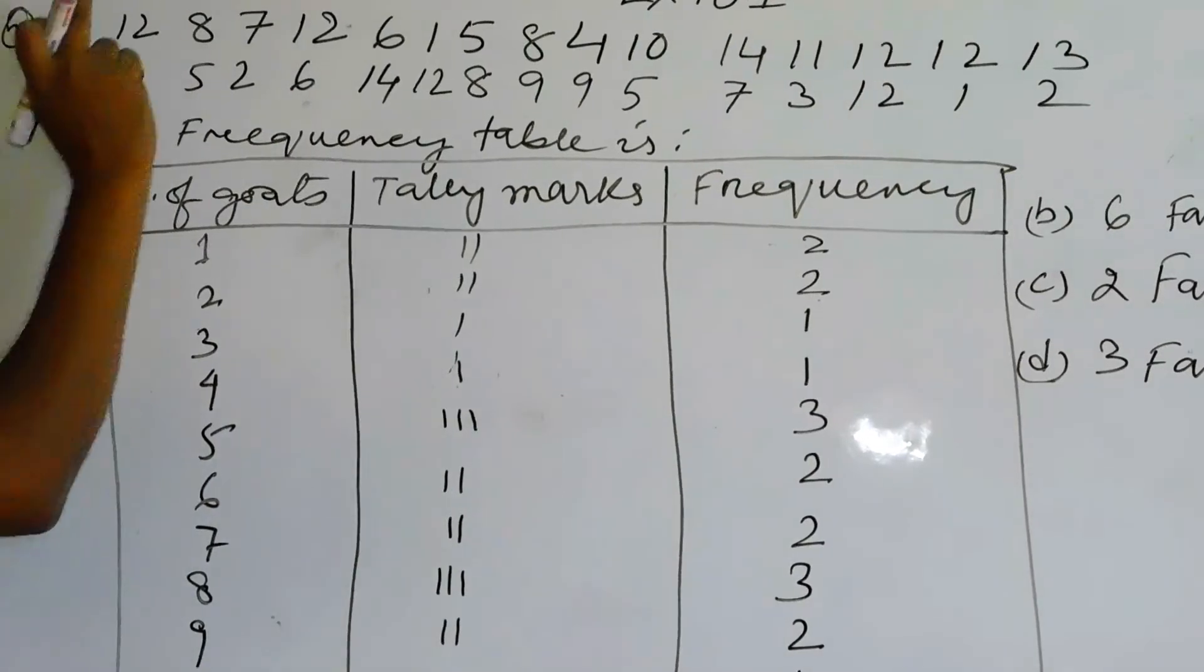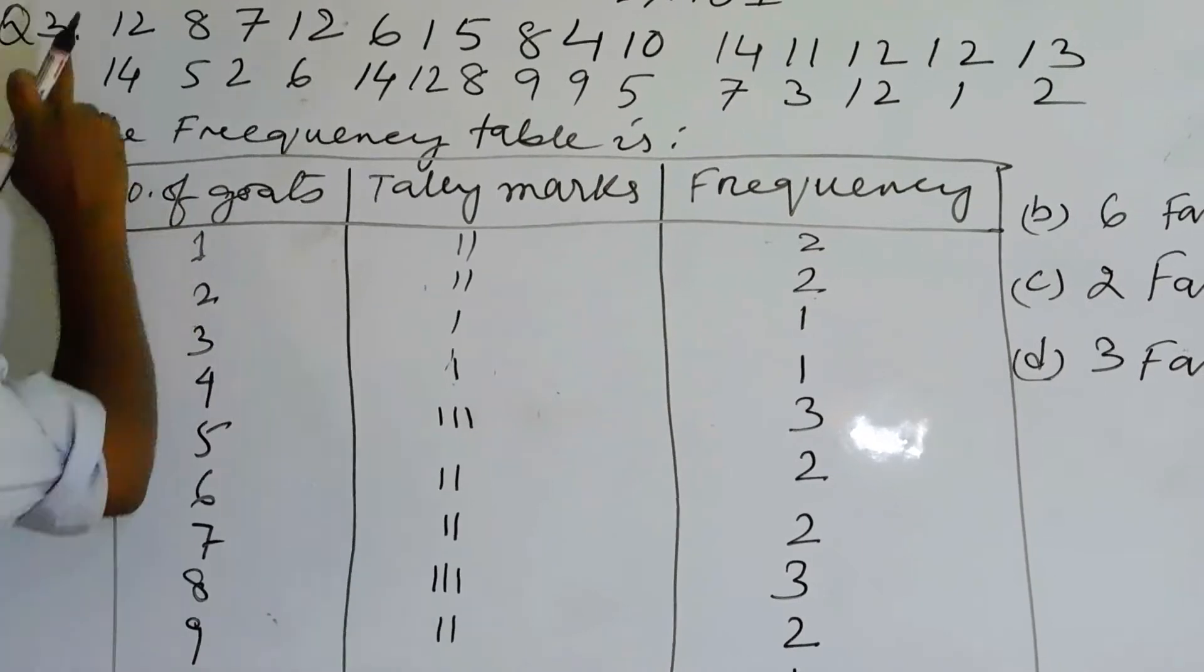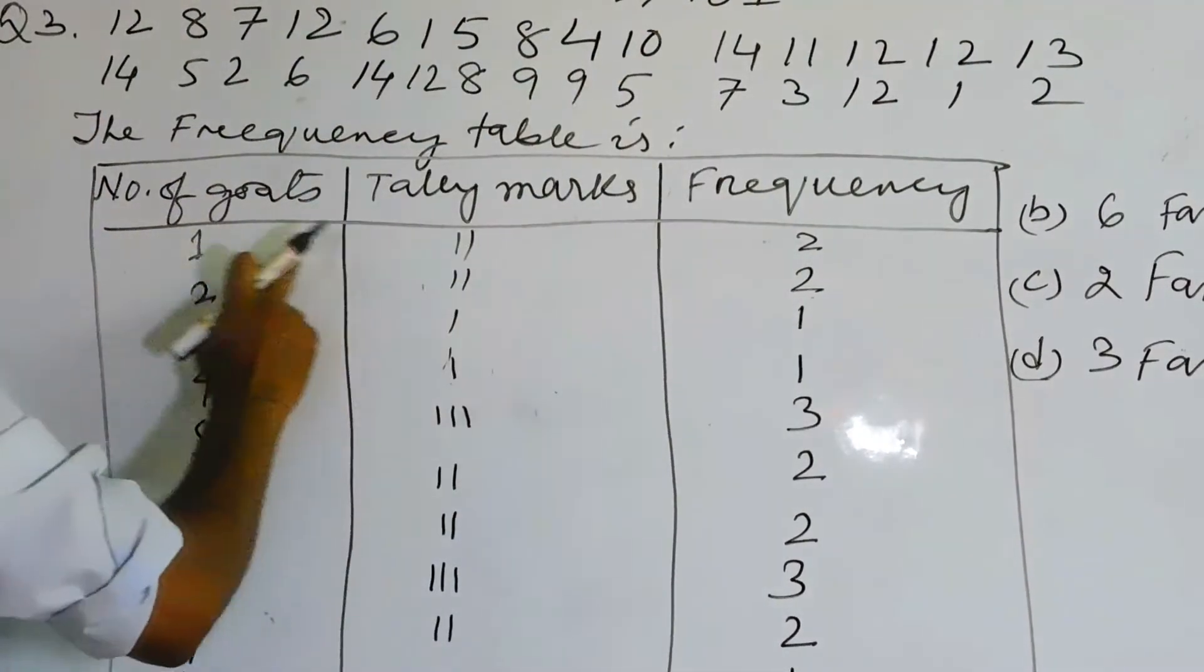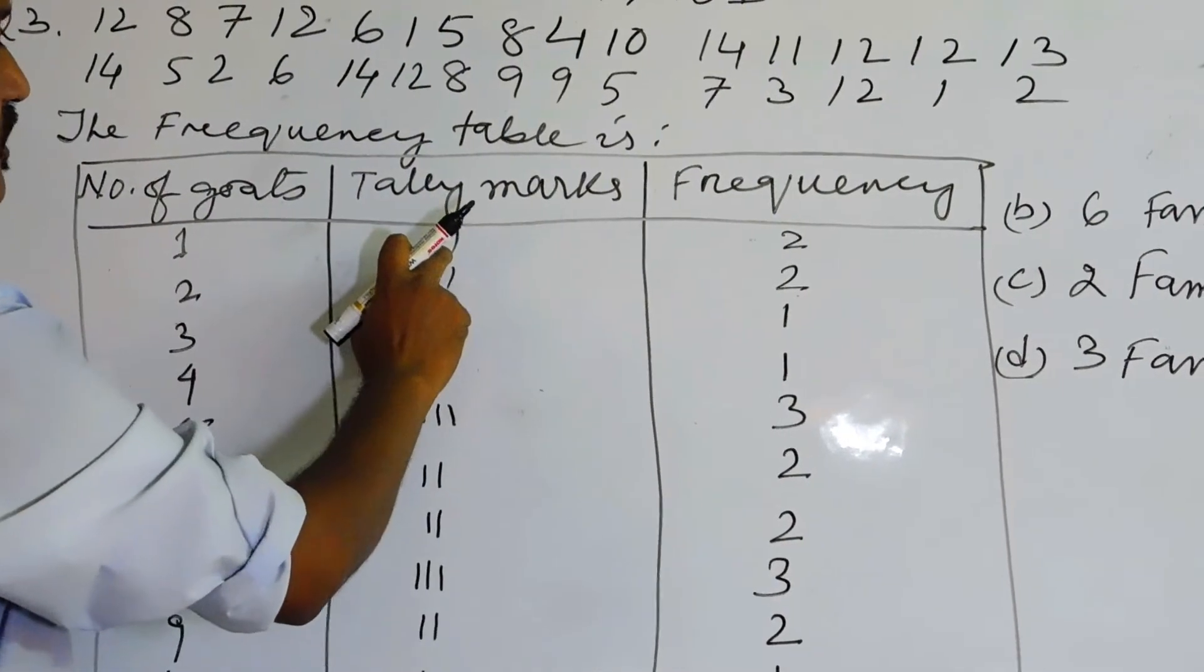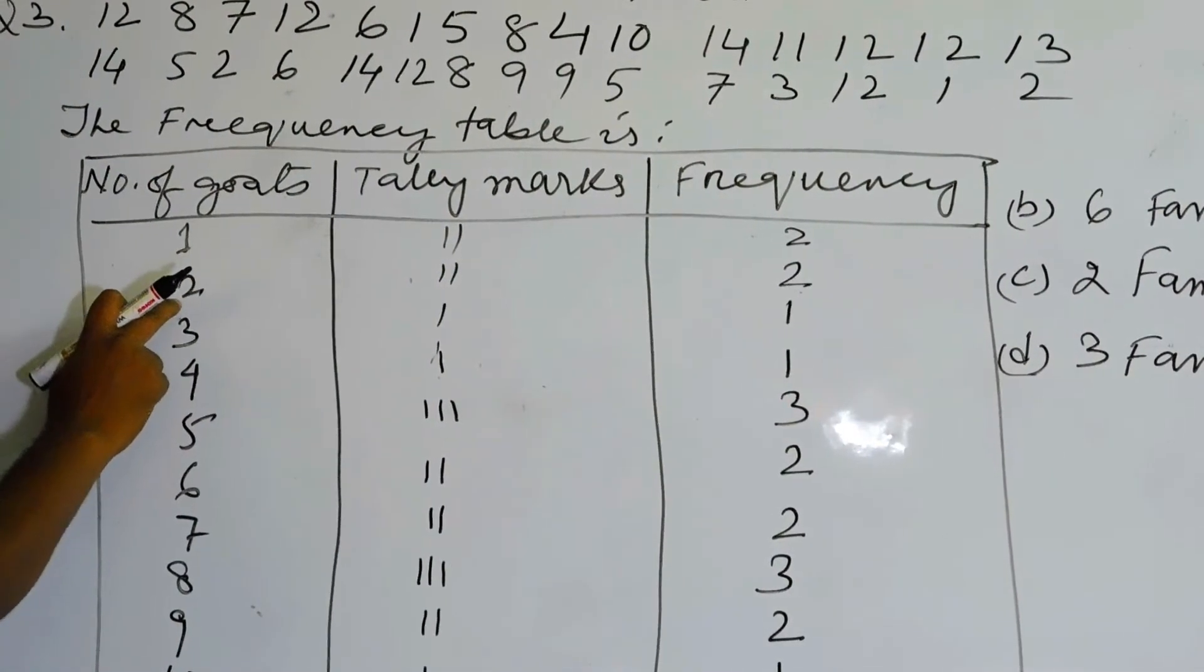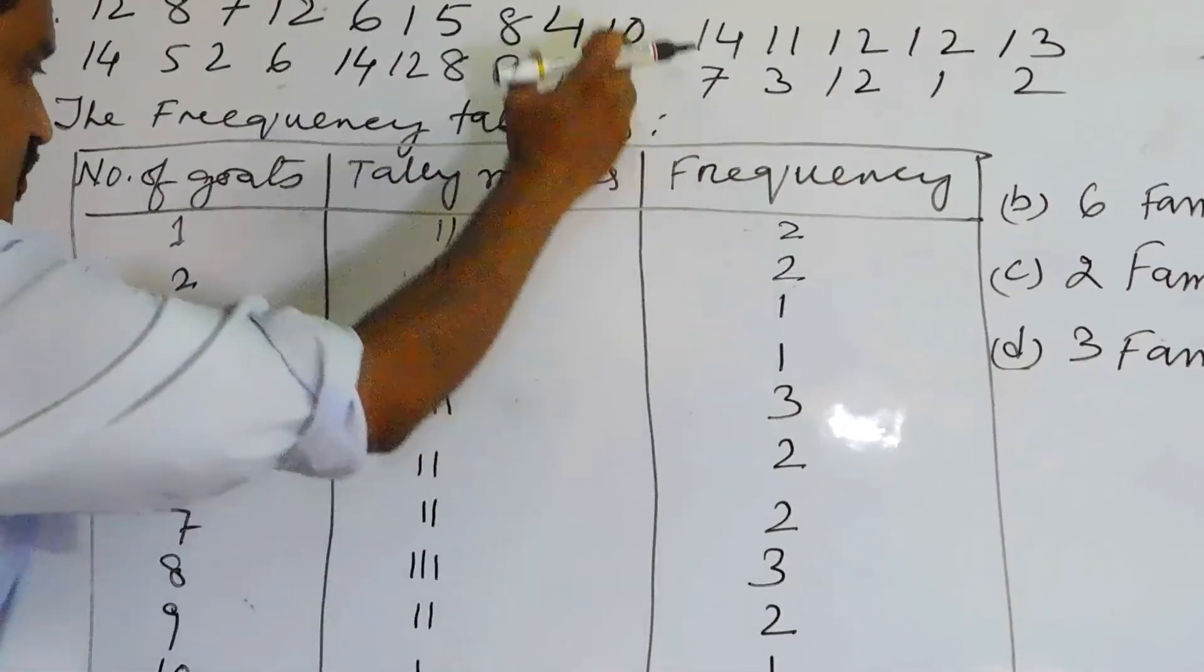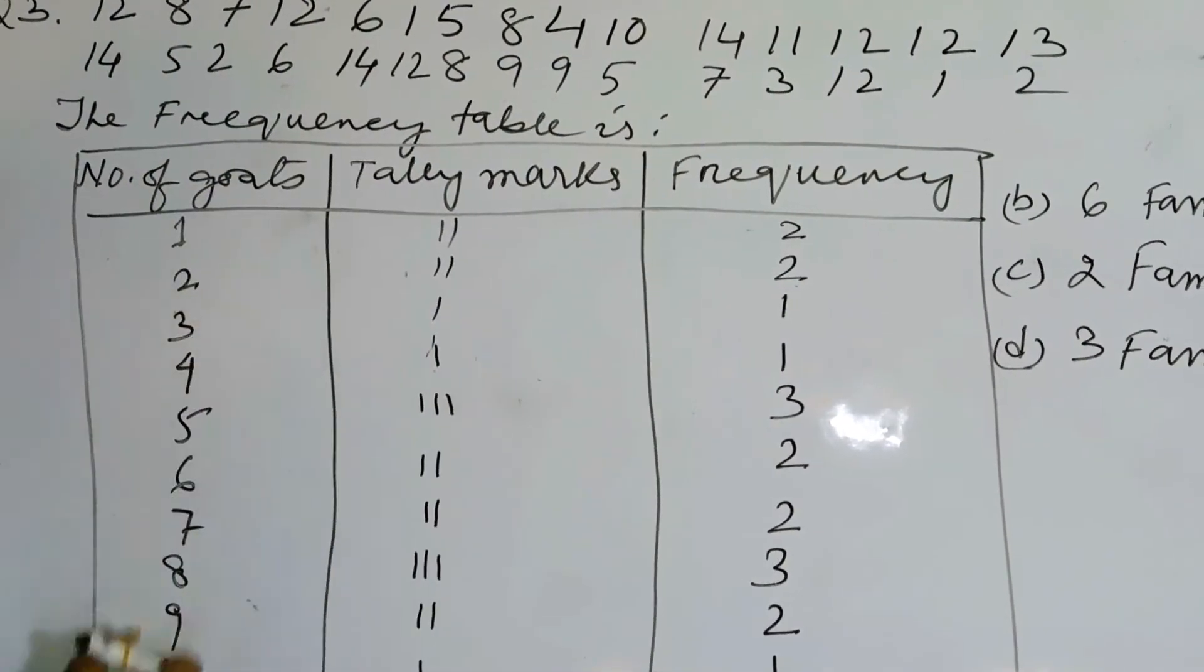Now here the least number of goats that we have is one. Now one, if you find out in this data lines you will find two families have got one goat. So two, coming to number of goats two, that is two families. So coming to frequency two.